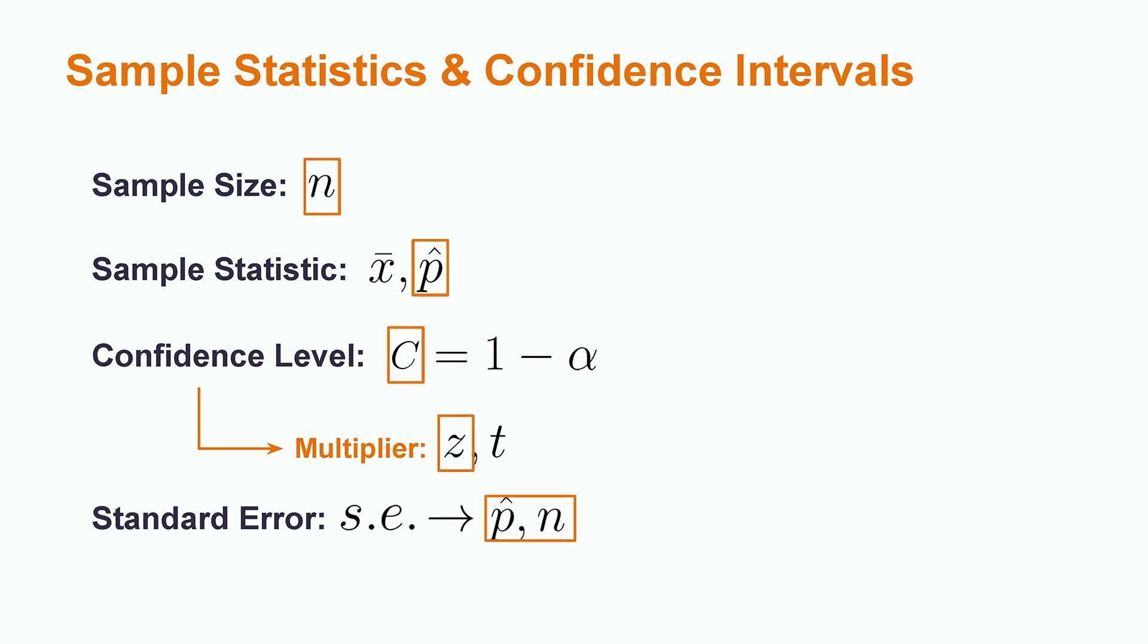For the single population proportion, we will focus on the sample size, the sample proportion p hat, a confidence level, a z multiplier related to the normal distribution, and a standard error, which will be a function of the sample proportion and the sample size.